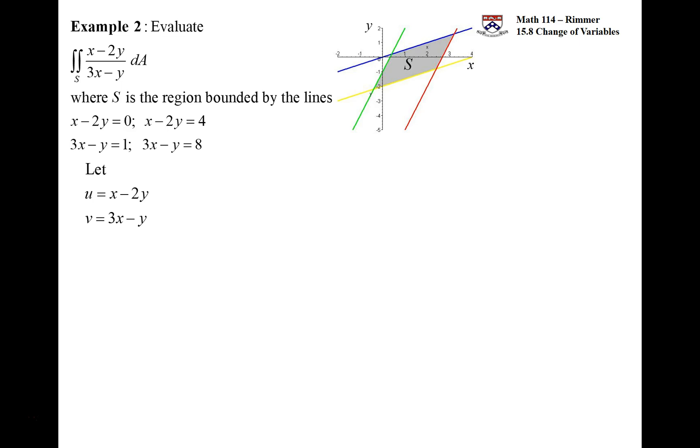Without too much thought you can think of letting one of them be u and the other be v. Since x minus 2y goes from 0 to 4, then u will go from 0 to 4. Since 3x minus y goes from 1 to 8, then v will go from 1 to 8. It seems almost too straightforward, so we'll do more difficult regions and transformations in other videos.